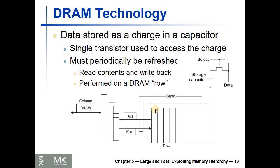Each cell is one bit, and usually many bits are organized in one row. The row usually has many bits. Some memory chips have several memory banks, where each bank is an array of bits organized in rows and columns. Usually one row is read at a time.